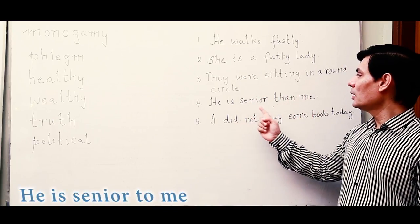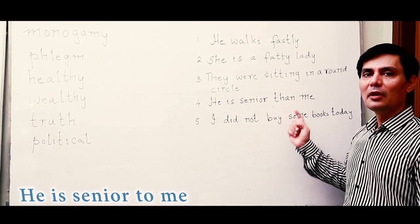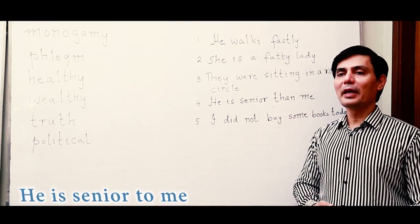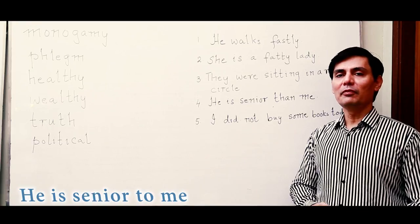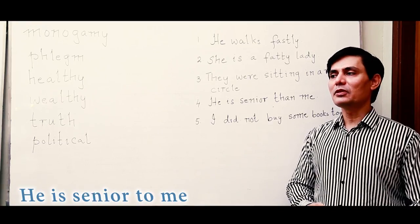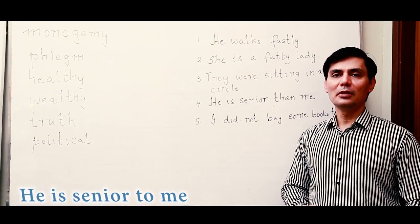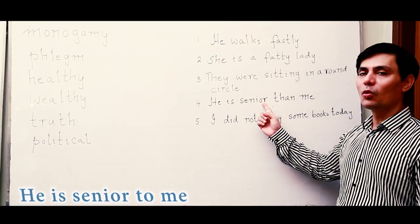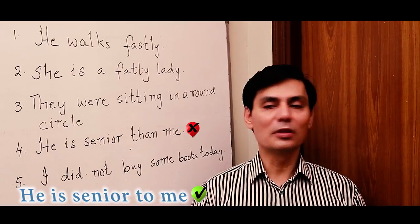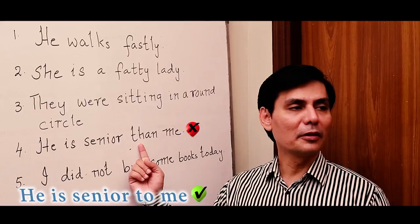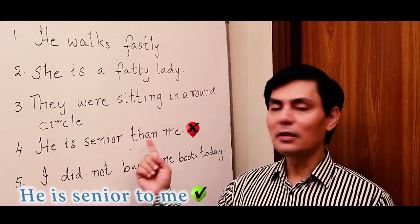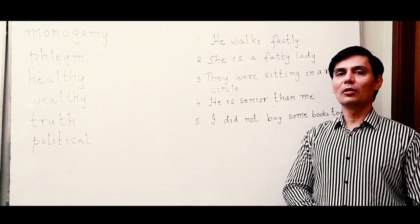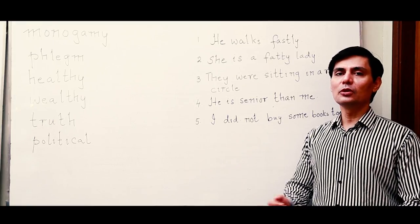The fourth sentence: 'He is senior than me.' Whenever we compare, we use the comparative degree and the word 'than' — like 'he is fatter than me' or 'he is taller than me.' But when an adjective ends in '-or,' you do not use 'than.' You say 'he is senior to me,' 'he is junior to me,' or 'this cloth is inferior to that cloth.'